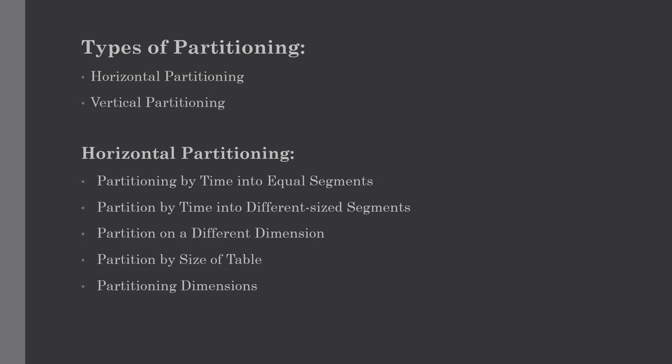The last horizontal partitioning type is partitioning dimensions. If a dimension contains a large number of entries, it is also required to partition the dimensions. For example, consider a large dimension that changes over time — if we need to store all variations to apply comparisons, that dimension may become very large and definitely affect response time. Therefore we have to partition dimensions which contain a large number of records.